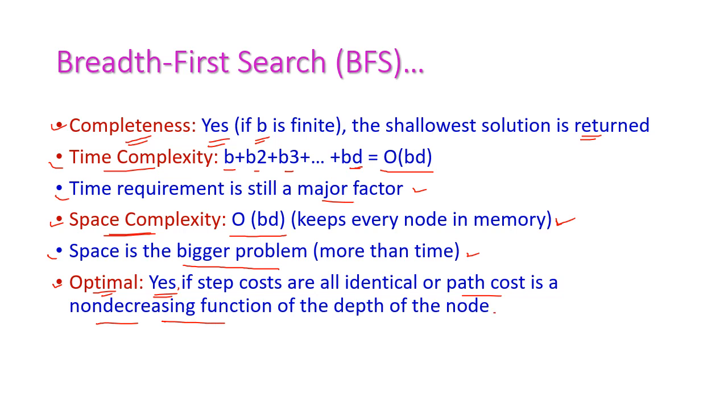In summary: completeness is yes, time complexity is O(B^D), space complexity is also O(B^D), and BFS is an optimal algorithm. That's all about the BFS algorithm. In this class, we have seen what uninformed searching strategy is, six different algorithms in uninformed searching strategies, and the BFS algorithm in detail. In the next class, I will teach you uniform cost search. If you have any doubts, please text me in the comment box, and you can give your suggestions there as well. Thank you.